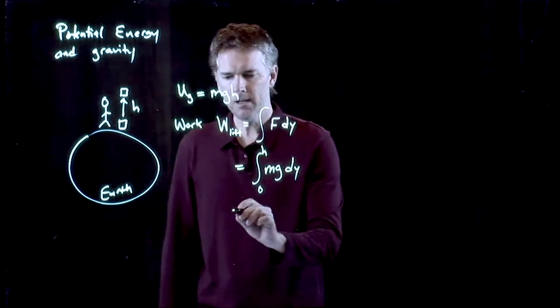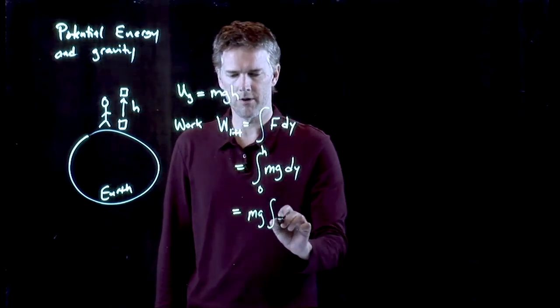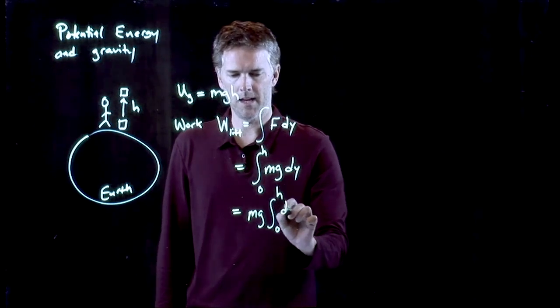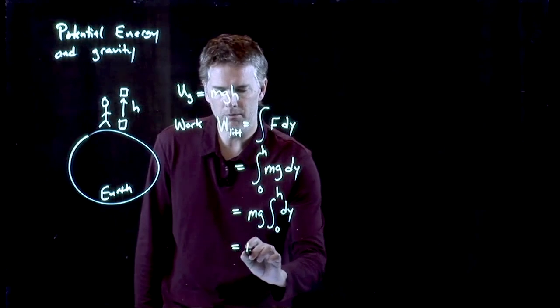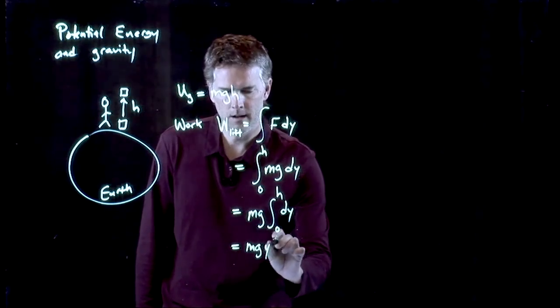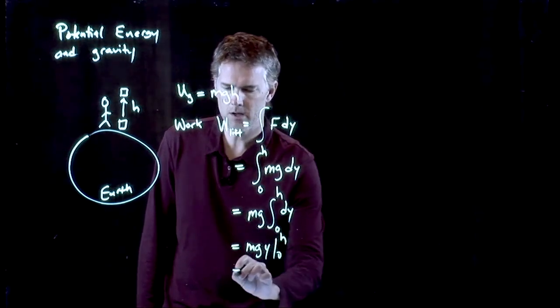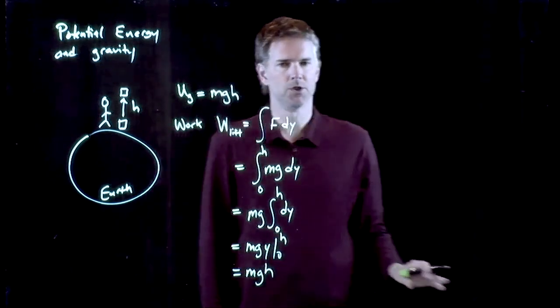But mg is just a constant. So that comes out in front. We have the integral zero to h of dy. But that just becomes y evaluated from zero to h. And so we just get MGH.